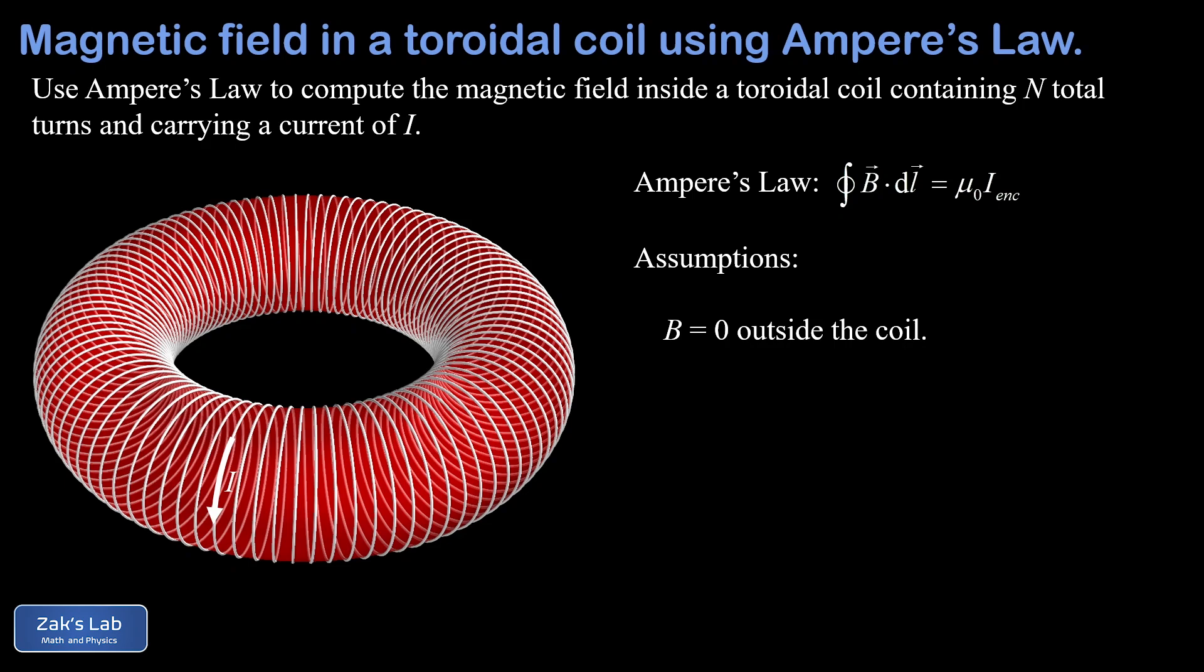We also showed that the field inside the solenoid is parallel to the solenoid axis, so we're going to assume that when we bend the solenoid into a circle that magnetic field is going to follow the axis of the circular cross section - in other words, the magnetic field is going to be circumferential.